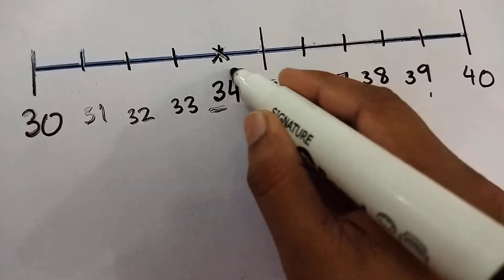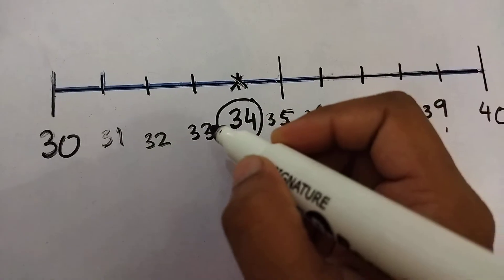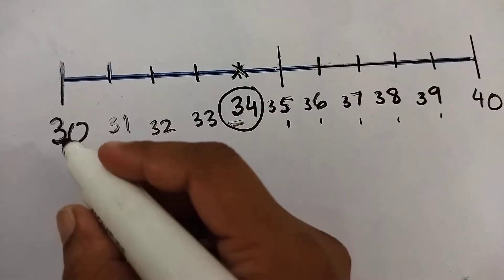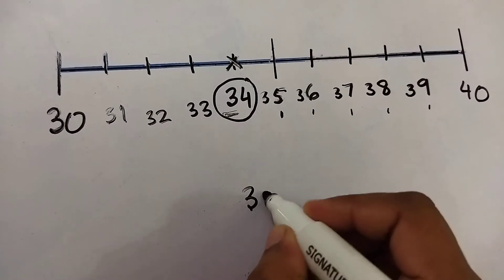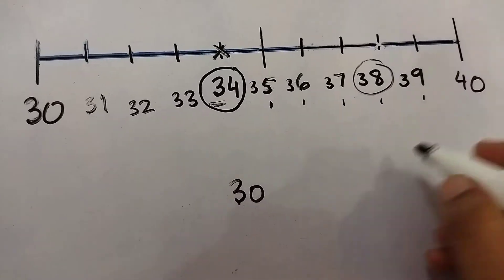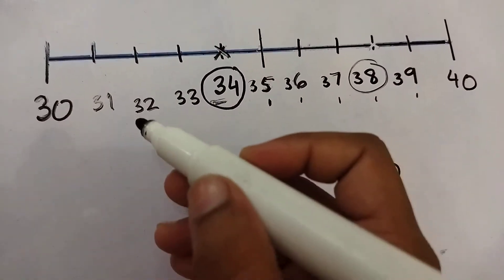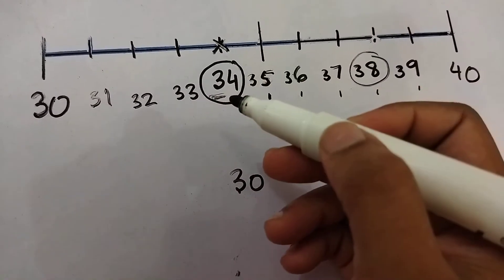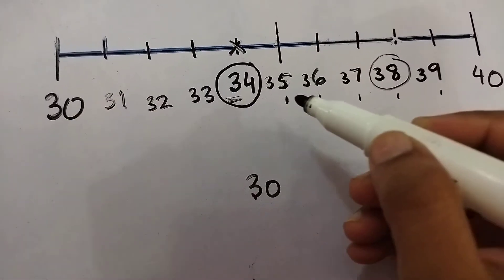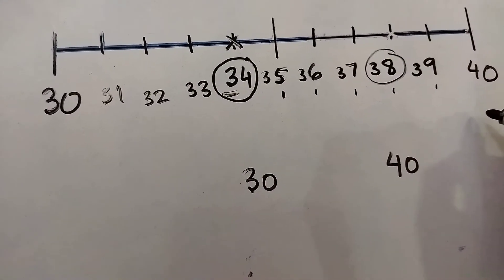For example, here we have 34. Since it is less than 35, when we round off to the nearest ten it becomes 30. But if we have 38, when we round off it becomes 40. So: 31, 32, 33, 34 all round off to 30. But 35, 36, 37, 38, 39 all round off to 40.